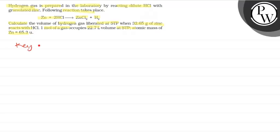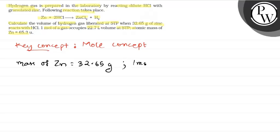Here we have a key concept. Applying the mole concept, we have mass of Zn equal to 32.65 gram that is given. And we know that 1 mole occupies 22.7 liters of volume at STP, this is also given.